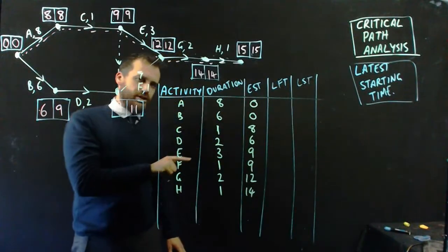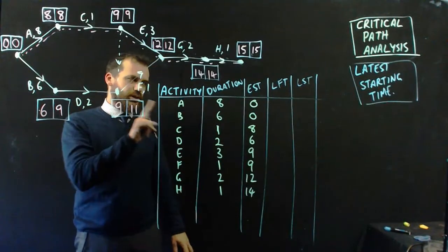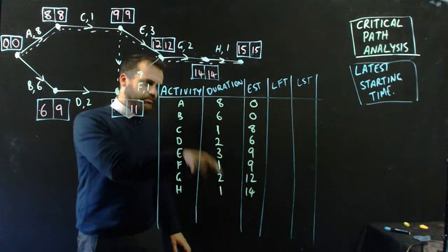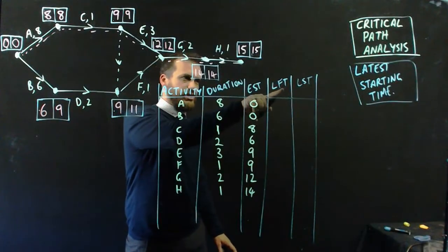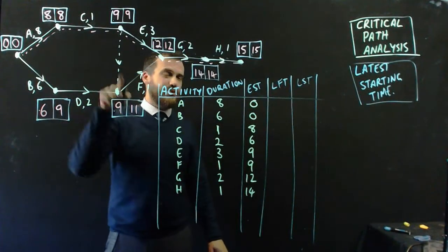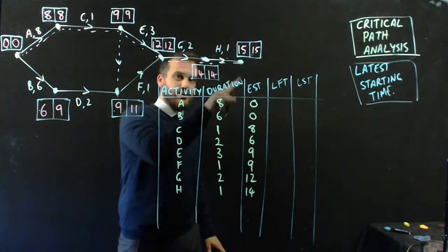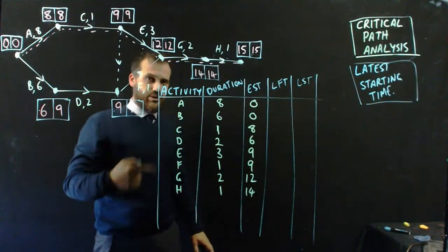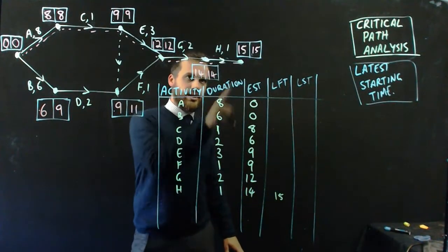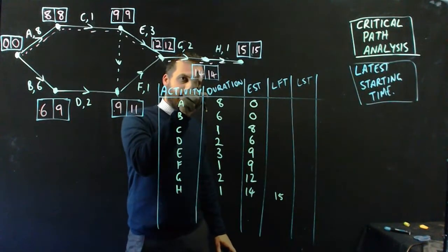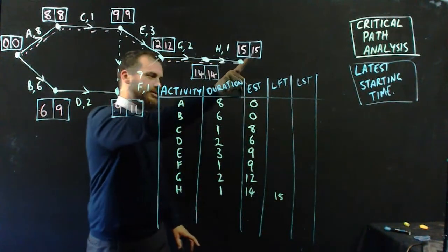Now, what about latest finishing time? These are the latest that the activities are allowed to end. I'm going to start from the bottom, which feels non-standard, but it'll make sense in a second. We found latest finishing times by backwards scanning, and I'm going to do the same here. Now, H's latest finishing time is this thing here. That's when the project's going to finish, and H is the last thing to do in the project. So it's 15. Whereas when I did the earliest starting times, I was using the box before the letter here for H, when I'm doing latest finishing times, I'm using the box after the letter here.